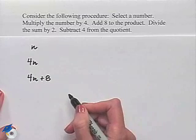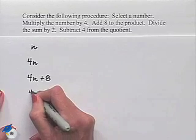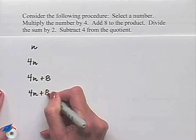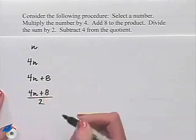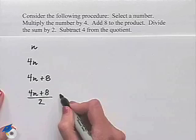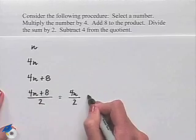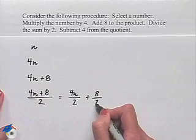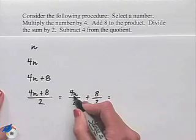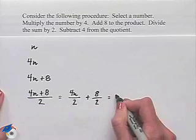Next, we want to divide the sum by 2. So we'll have 4 times n plus 8 divided by 2. Now, here we can simplify somewhat. So I can rewrite this as 4 times n divided by 2 plus 8 divided by 2. That's going to give us 4 times n divided by 2 is going to be 2n.